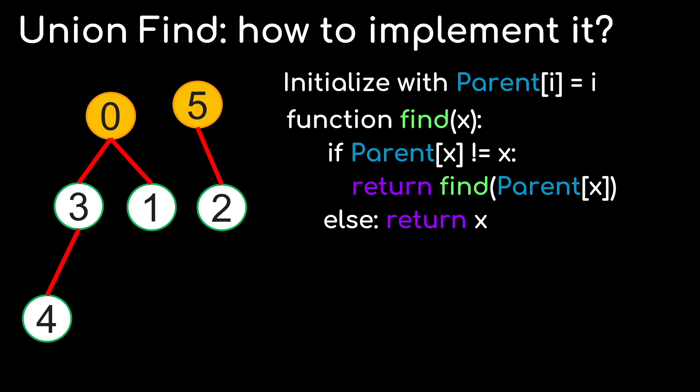Next, we implement this function find of x, which finds the root of the tree that contains x. So first, if the parent of x is not itself, then we know that we have not yet reached the root of the tree. So we travel upwards the tree by one step by calling the find function recursively on the parent of x. Otherwise, we know that we have reached the root of the tree, so therefore we just return x.